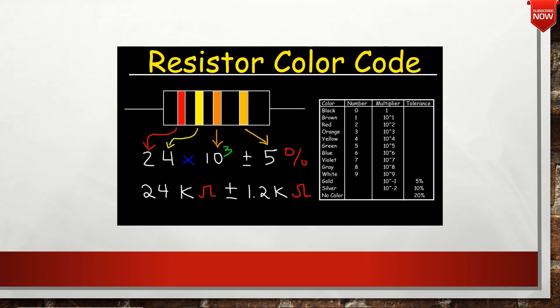We have a resistor with 4 rings. On the left side, there are 2 rings: Red and Yellow.